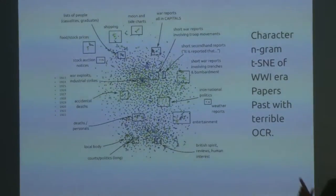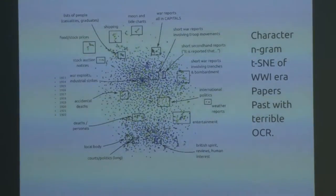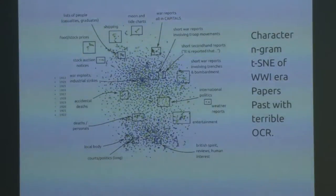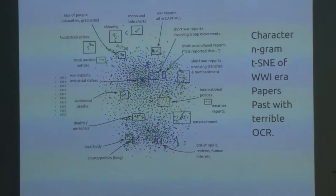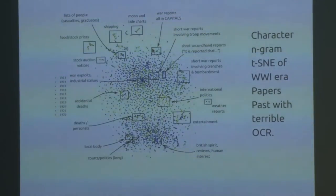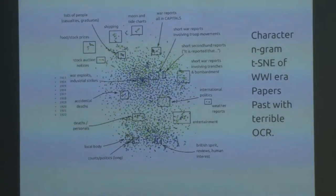Each of these boxes are sections I zoomed into. Up at the top, shipping charts and moon and tide charts cluster together — they're similar lists of numbers. There's a strong cluster of lists of people, whether casualties or university graduates. And there's another cluster of trench warfare articles — short two-sentence pieces that use the same phrases over and over, giving them the same character n-gram count, so they all cluster together.